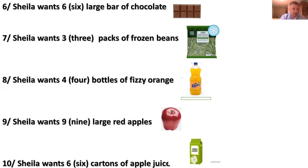And number ten: Sheila wants six cartons of apple juice. On the right you can see a carton of apple juice — six cartons. That's okay, no problem with this. Now we can go on to the lesson.